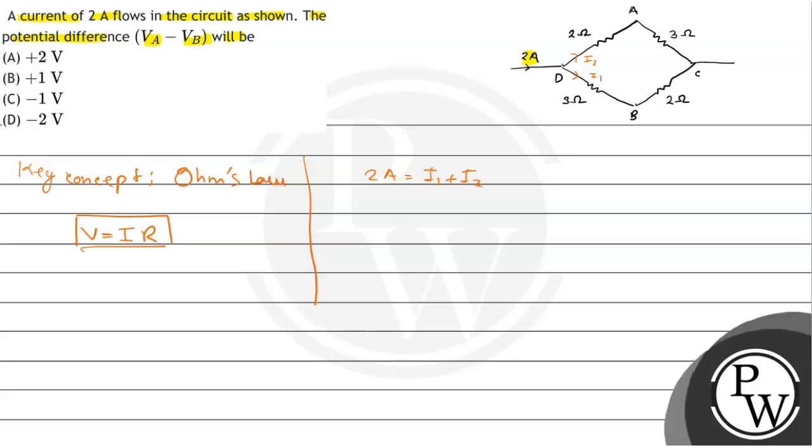Now, if we look at the upper side, there is 2 Ohm and 3 Ohm in series. So, the upper side has 2 plus 3, that is 5 Ohm, and the lower side also has 5 Ohm.